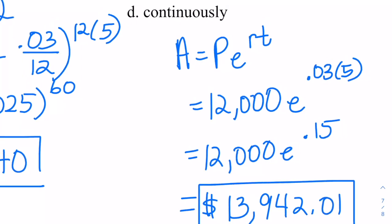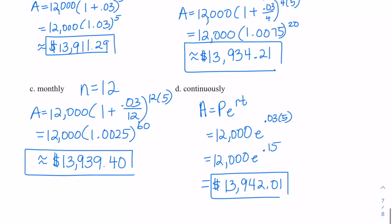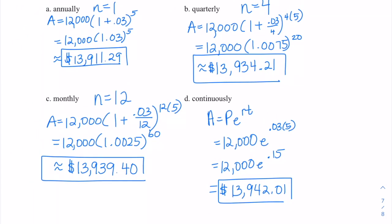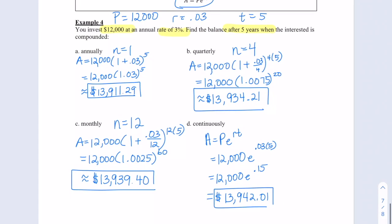Looking at these values, they're all pretty close to each other. If we had a number that was an outlier, we'd know we probably did something wrong. The formula for compound interest comes from the idea of Euler's number — you can see applications not just in nature, but in money. I hope this lesson was helpful, and I'll see you all in class.